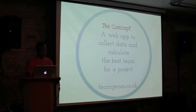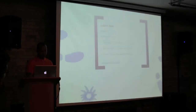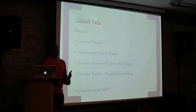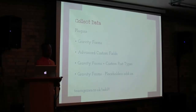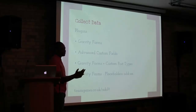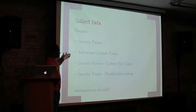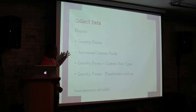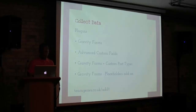The website was teamjeans.co.uk. We had to collect data into WordPress, so we used Gravity Forms, Advanced Custom Fields, Gravity Form post types, and the Gravity Form placeholders add-on to make our placeholders. We set up the fields for the data we wanted to collect using Advanced Custom Fields, which allowed us to easily manipulate those on the back end. We then used Gravity Forms to put that data into a custom post type in WordPress.